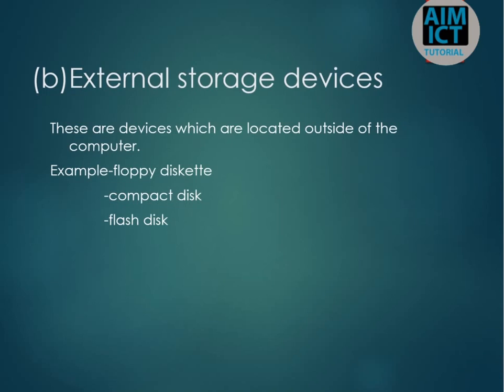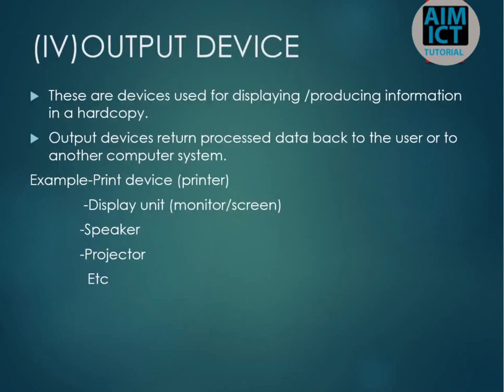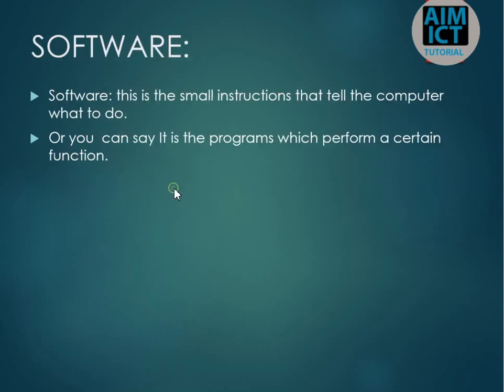Output devices are devices for displaying or producing information in either soft copy or hard copy form. Hard copy output is on paper, for example. Soft copy is output you cannot touch, such as what is displayed on a screen. The question of which is better — hard copy or soft copy — is something ICM has asked in exams.